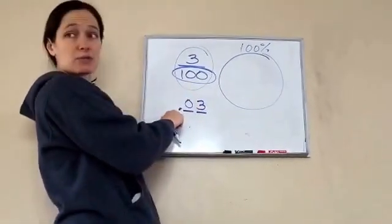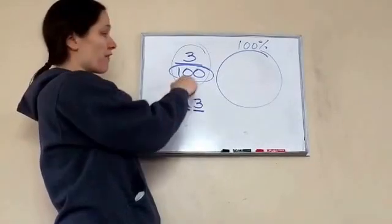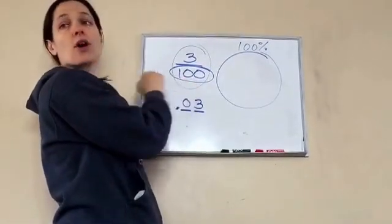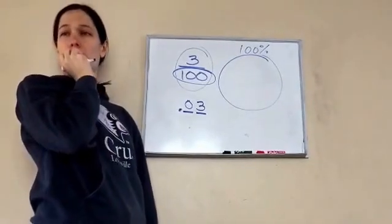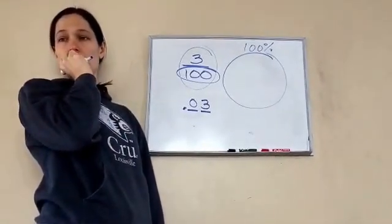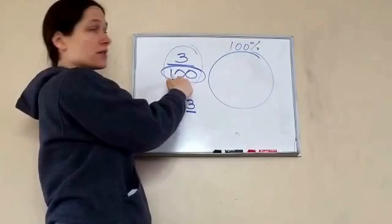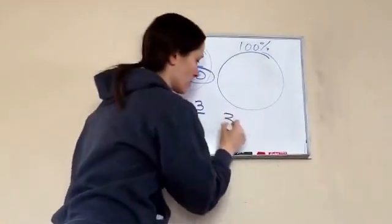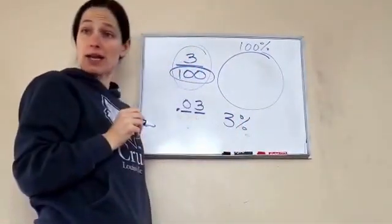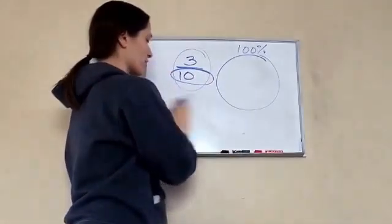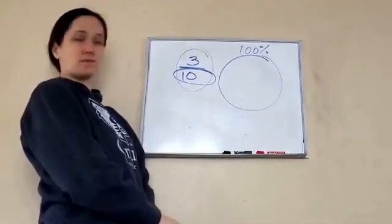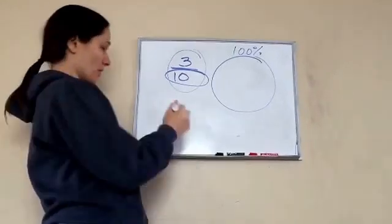So, this is the decimal form of three over a hundred. What is the percent? Oh. If you've already got it over a hundred, then that's the answer. Yeah. Three percent. Okay? But if it was three over ten, help me figure out what three over ten is as a decimal. That would be 0.3.